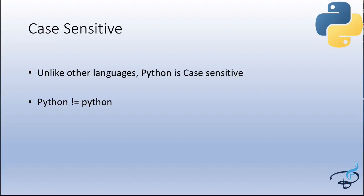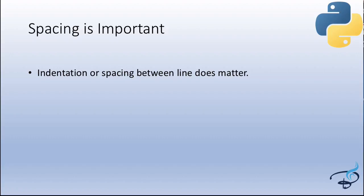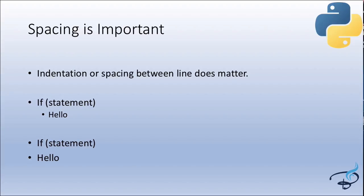An important part of Python is that, unlike other languages, Python is case sensitive — so 'Python' and 'python' are not equal. Spacing and indentation are also super important. In other languages you use curly braces to create blocks, but in Python you just need indentation — a tab. For example, in an if statement, the code inside is indented with a tab, and if a line is not indented, it is not part of that if block.